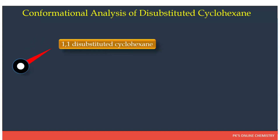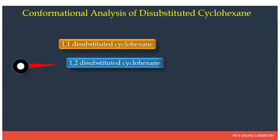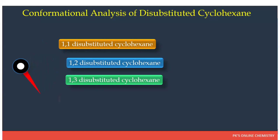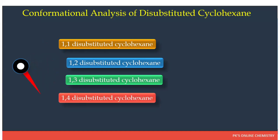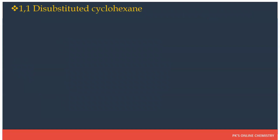Depending upon the relative positions of the substituent, four structural isomers are possible: 1,1-disubstituted cyclohexane, 1,2-disubstituted cyclohexane, 1,3-disubstituted cyclohexane, and 1,4-disubstituted cyclohexane. In this video we will discuss only the 1,1-disubstituted cyclohexane — its conformational isomers, optical activity, and relative stability. In the next few videos we will discuss the remaining structural isomers.